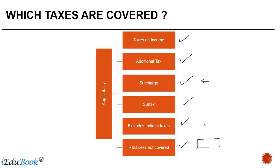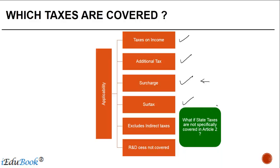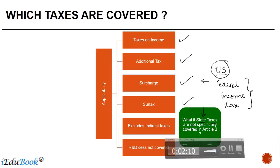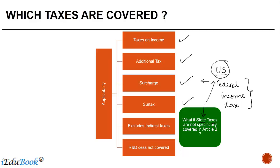One question that comes up is: what happens if a state tax is not specifically covered in Article 2? In the India-US treaty, it mentions federal income tax, but in the US you may also have state taxes. If these are not mentioned, would you get the benefit of the treaty? Specifically in the context of the India-US treaty, the judiciary seems to be divided — some cases have held that these should be covered, whereas others have denied it.